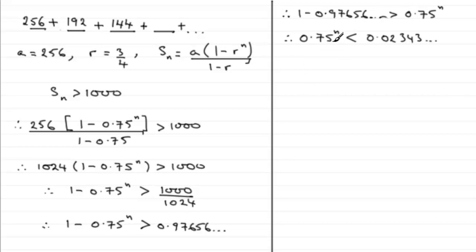And that's what I'm going to do. We'll take logs to both sides of this, so we get log of 0.75 to the power n must be less than the log of 0.02343 and so on.